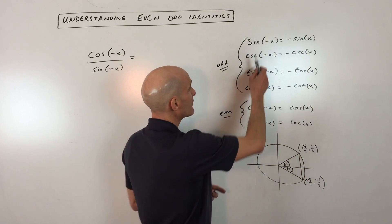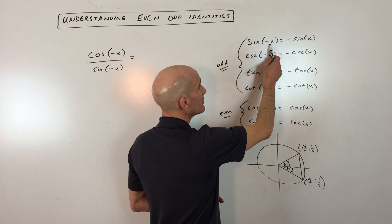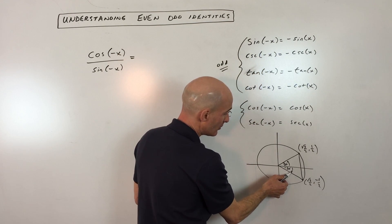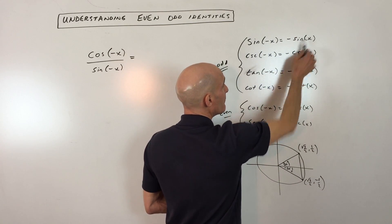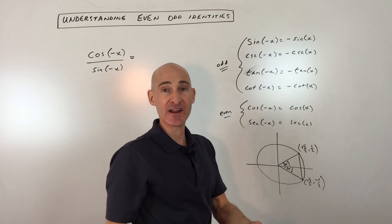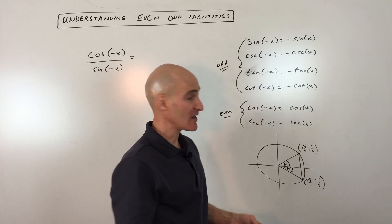So let's take, for example, this first one here, the sine of negative x. What does that mean? That means if you take the sine of a negative angle, it's going to be the same value as the sine of a positive angle, but it's going to have the opposite sign. So if it's negative, it'll be positive. If it's positive, it'll be negative.